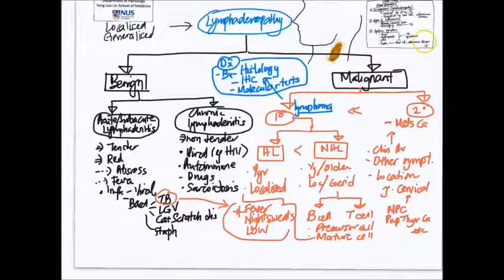Just to sum up, to recap, we looked at the different clinical presentations of lymph node disease which can be localized or can be systemic. Then we looked very briefly, very broadly at the main differential diagnosis for lymphadenopathy, which can be benign or malignant. Under benign it includes specific, usually infectious, acute or subacute lymphadenitis and also chronic lymphadenitis.